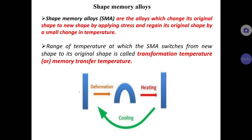The range of temperature at which the SMA switches from a new shape to its original shape is called the transformation temperature, also known as the memory transfer temperature. This change does not occur at a single temperature point; rather it takes a range of temperatures. However, the range is not very large — the change in temperature may be around 10 to 20 degrees Celsius — so it is a very small temperature change occurring over a range.